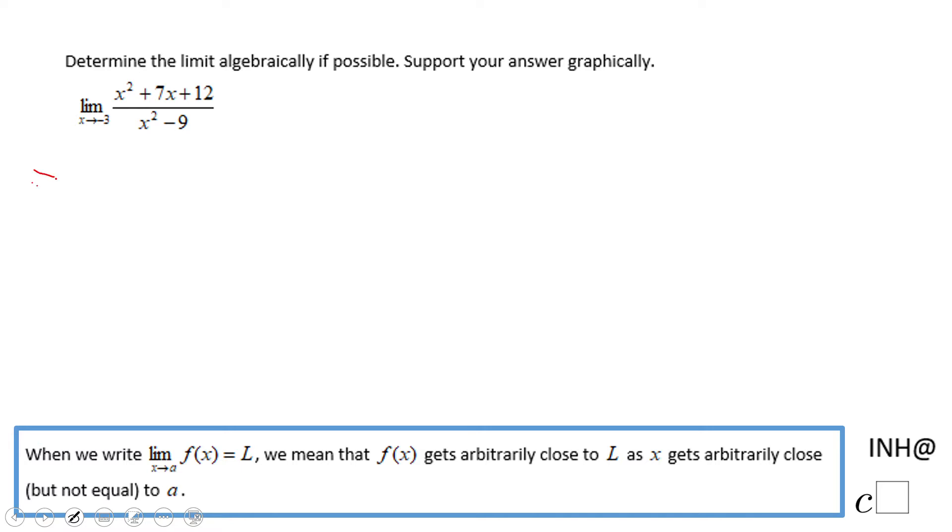And this different method is what we call simplifying rational expressions. So for that reason, we're going to need to factor out the numerator and the denominator.